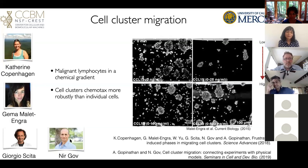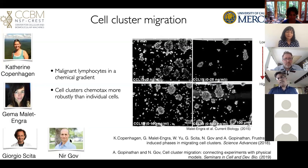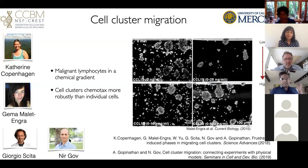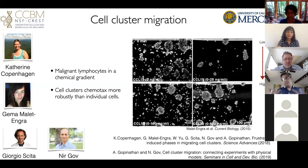The system they have is an in vitro system of malignant lymphocytes that are exposed to a chemical gradient of a substance known as CCL-19, which is a physiologically relevant chemo-attractant because it is produced in the lymph nodes.